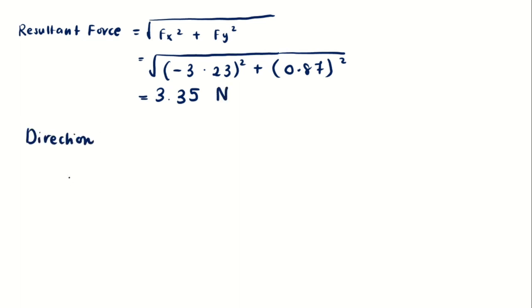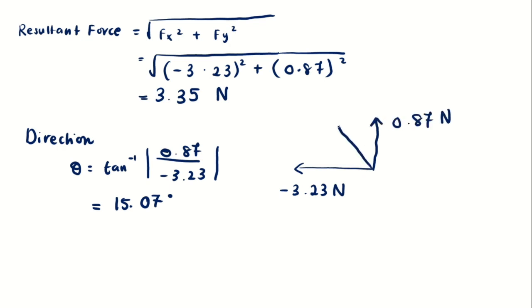The direction for the resultant force can be calculated by shift tan |F_y / F_x|, so we get 15.07 degrees. To identify whether the angle is from the positive x-axis or negative x-axis, we need to draw the direction for each of the components. We know that for x component it is to the left and for the y component it is upward, so we can say that it is 15.07 degrees from the negative x-axis.